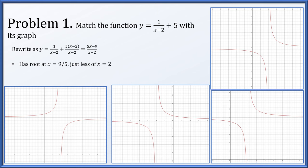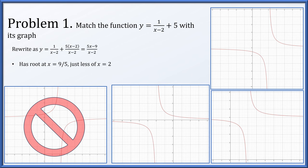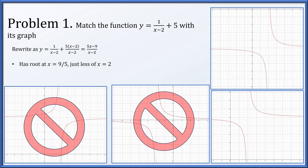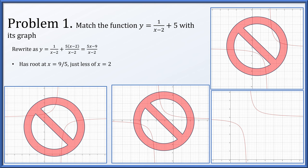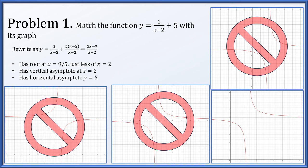We determine that the function has a root at x = 9/5, which is just a little bit less than 2. The first graph has its root a little bit bigger than 2, so that one's out. This graph does not have a root at all. In this graph, the root is just a little bit larger than 2 as well. Also, this function should have a vertical asymptote at x = 2 and a horizontal asymptote at y = 5, because the ratio of leading coefficients is 5. The remaining function appears to match.